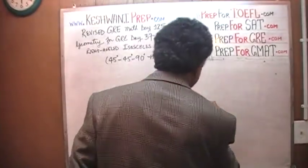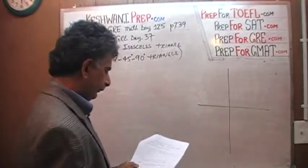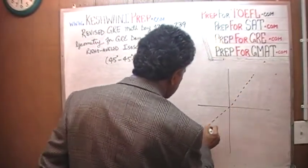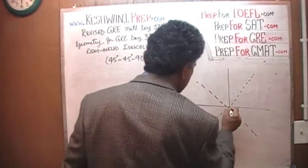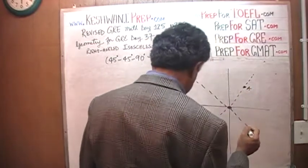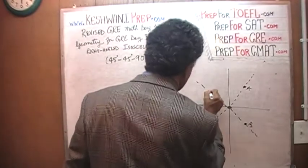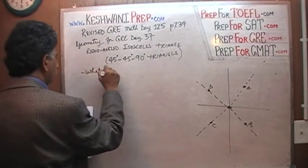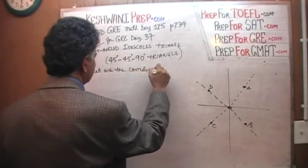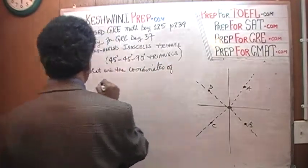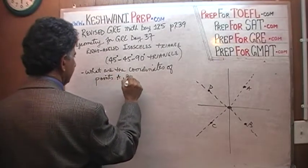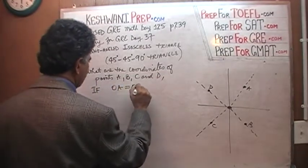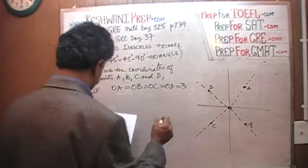Here is the question. We are told, listen carefully, we are simply being asked here, what are the coordinates of points A, B, C, and D, if O to A is equal to O to B, which is equal to O to C, which is equal to O to D, which is equal to 3.